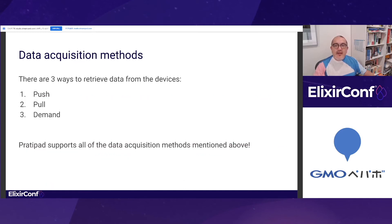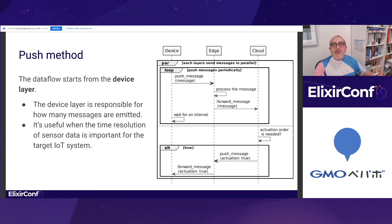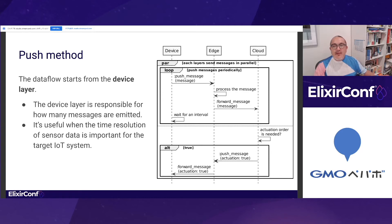Data acquisition methods in IoT systems can be summarized into three ways: Push, Pull, and Demand. Platypad supports all of them. The first one is the push method — it's the simplest way to retrieve data from the devices. In this method, devices just send messages as they like, typically in a periodic manner. The device layer is responsible for how many messages are emitted into the data flow. If you need real-time data retrieval, this method is what you want.